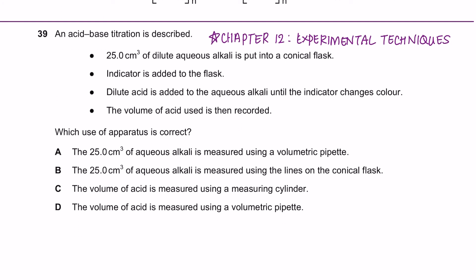The last two questions are from chapter 12. An acid-base titration is described. 25 cm³ of dilute aqueous alkali is put in a conical flask. Indicator is added. Dilute acid is added. And then volume of acid used is then recorded. Which use of apparatus is correct?